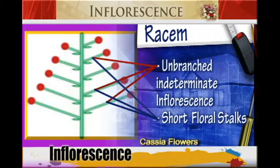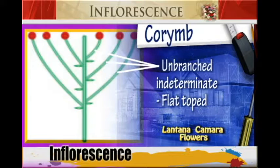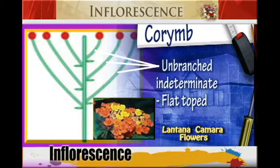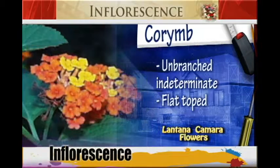We have another type which we call the Corymb. These are unbranched indeterminate inflorescence. They are flat-topped, and we find them in Lantana camara.